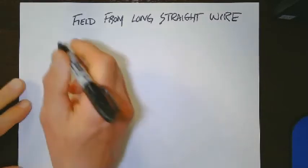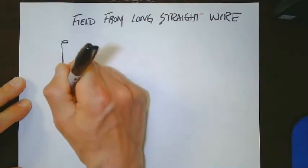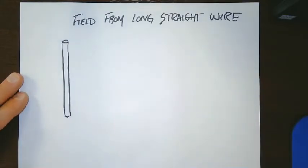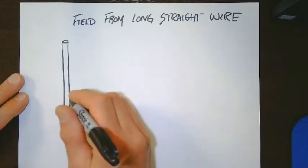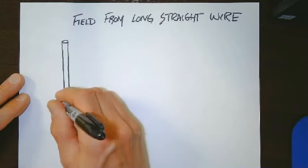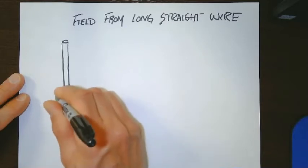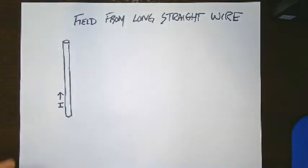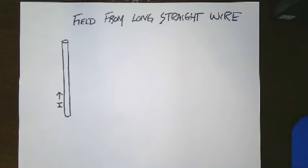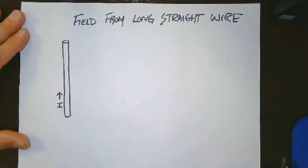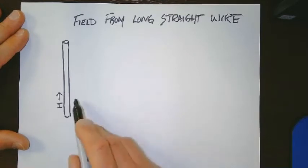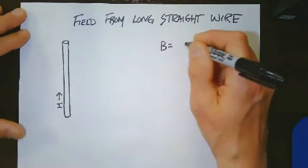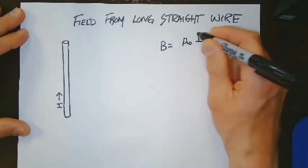So let me draw a picture here. Let's say that you have a wire that's carrying a current upwards. And this is like a super long wire, right? And we know that the wire creates a magnetic field around itself that gets weaker as you get further away.